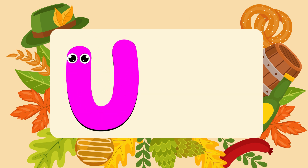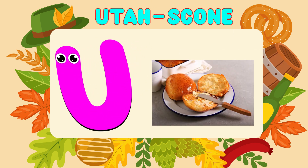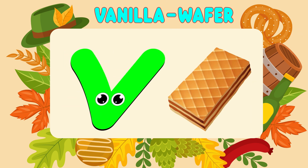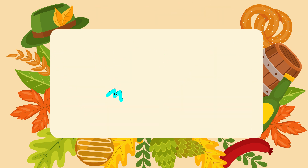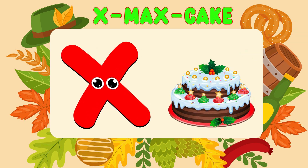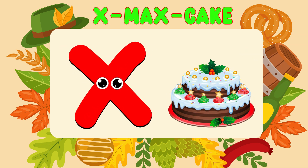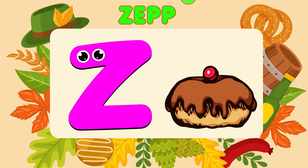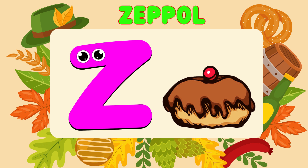U is for Utah Scone. U, U, Utah Scone. V is for Vanilla Wafers. V, V, Vanilla Wafers. W is for Waffles. W, W, Waffles. X is for X-Moss Cake. X, X, X-Moss Cake. Y is for Yorkshire Pudding. Y, Y, Yorkshire Pudding. Z is for Zeppo. Z, Z, Zeppo.